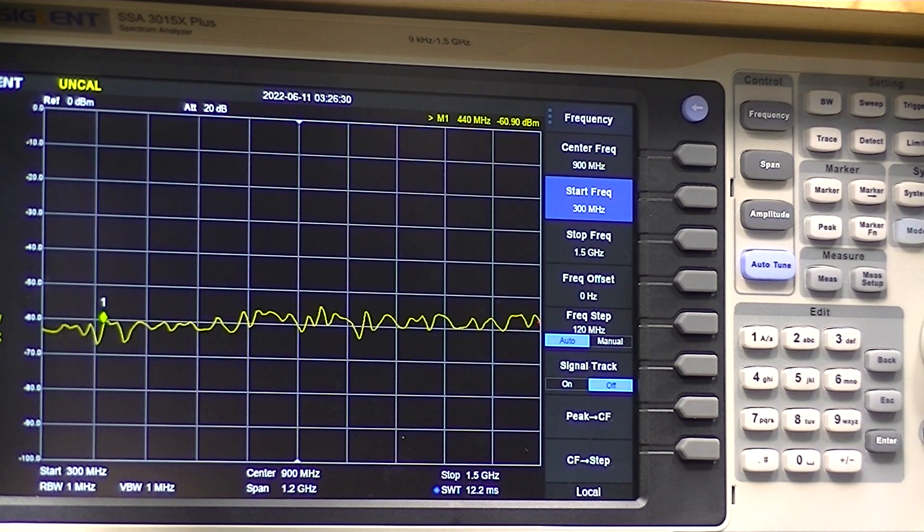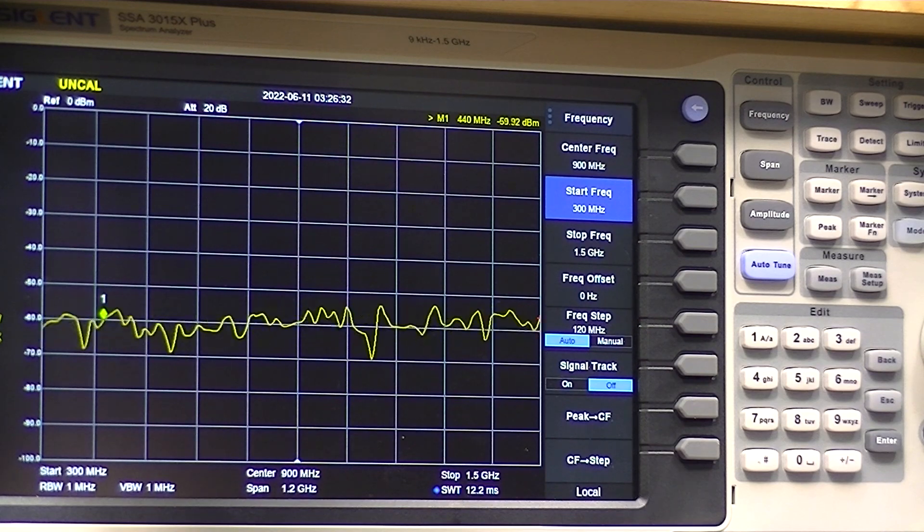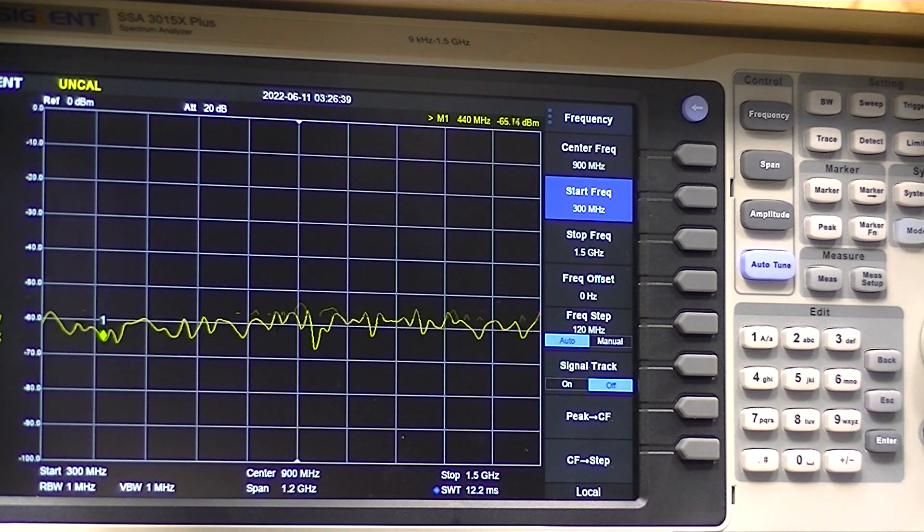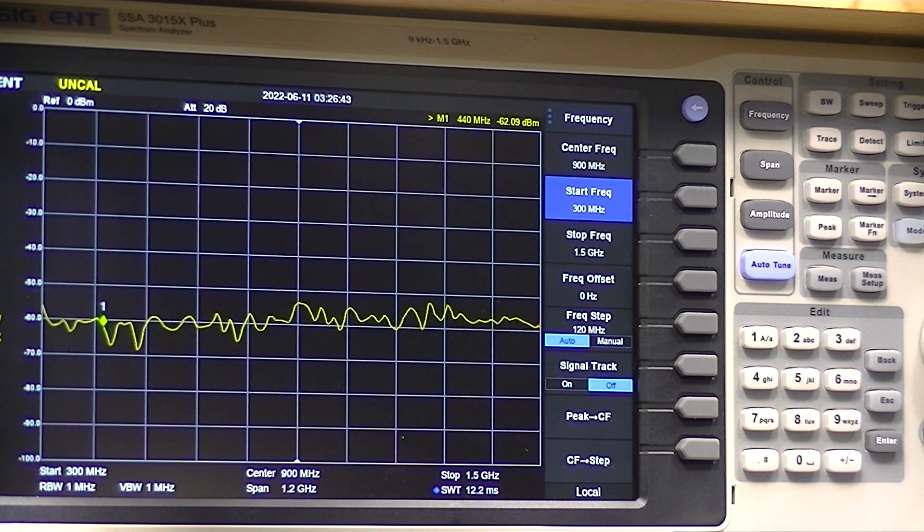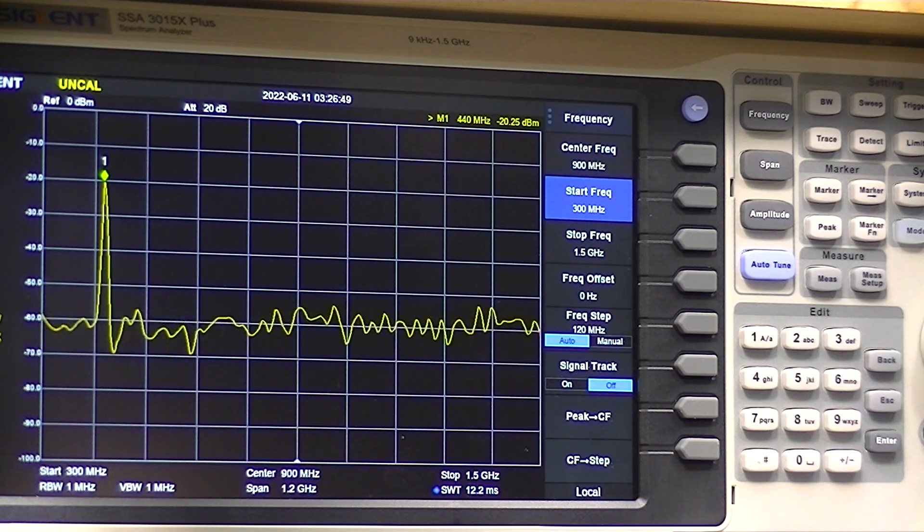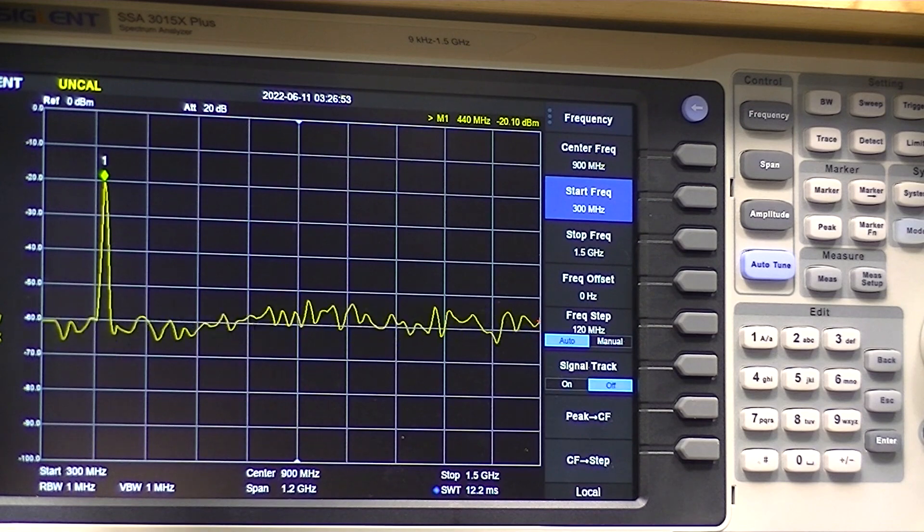Now, if I power the amplifier up, and I key the set, and we look at the marker set at 440, it's making minus 20 dBm.